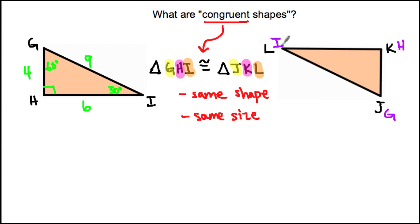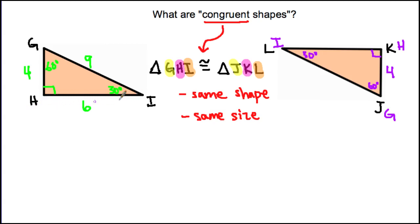Using that correspondence we can label triangle JKL. H is a right angle so K gets the right angle; G is 60 degrees so J is 60 degrees; I is 30 degrees so L is 30 degrees. For the sides: GH is 4 units so JK is 4 units; HI is 6 units so KL is 6 units; and the long side GI is 9 units, so JL is 9 units.